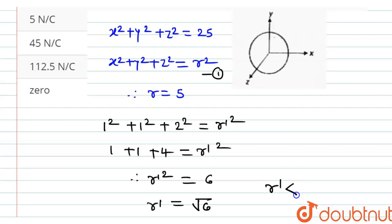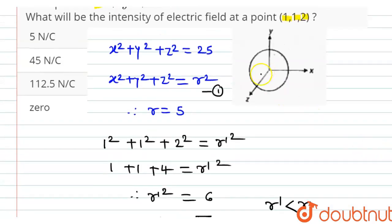this point must be inside the spherical shell. So, we know that electric intensity inside the spherical shell is always equal to 0.